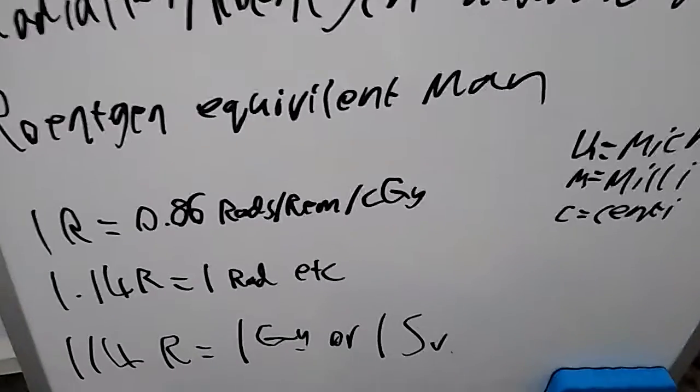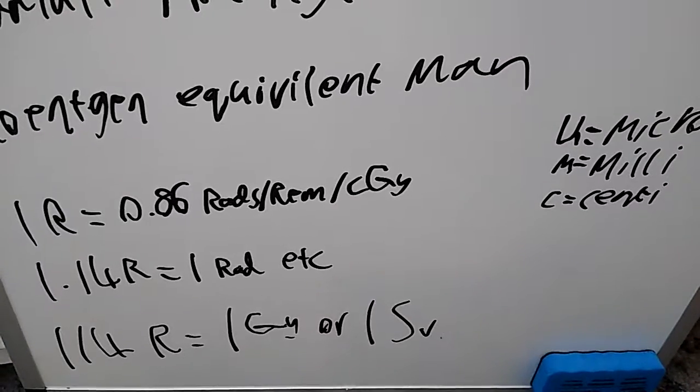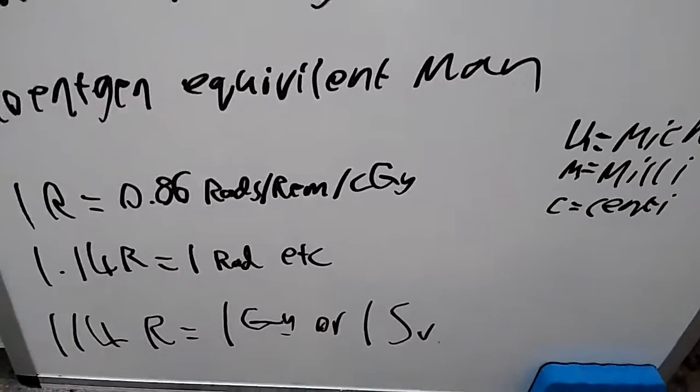One Röntgen equals 0.86 Rads, Rems, or Centigray. 1.14 Röntgens would be equal to one RAD, if that makes sense. So because if you had one, four to that, it'd make one.